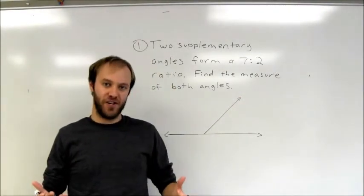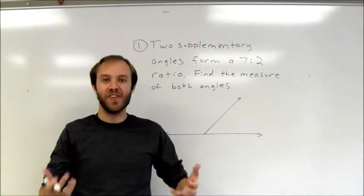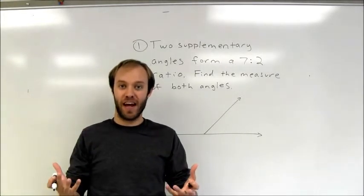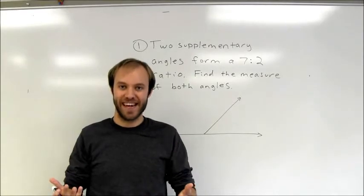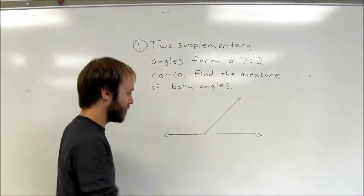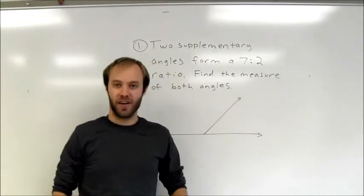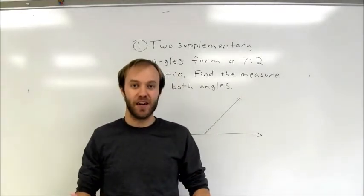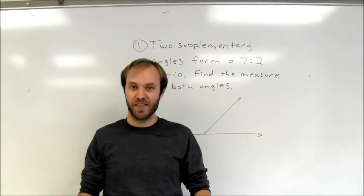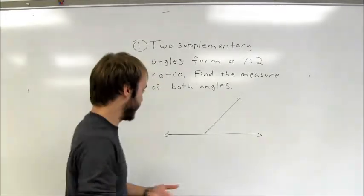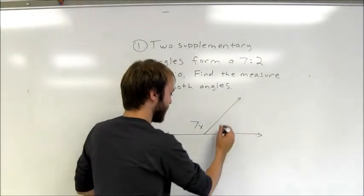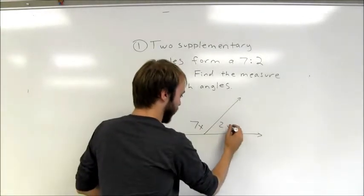Looking at the 7 to 2 ratio, it tells us that we're breaking that 180-degree angle up into equal-size pieces. Seven of those pieces go with one angle, and two of those pieces go with the other angle. Let x represent the size of each of those pieces — seven pieces going with one angle, two pieces going with the other.